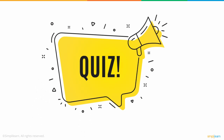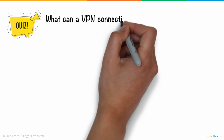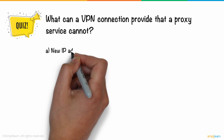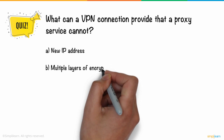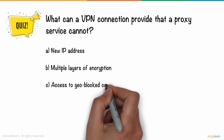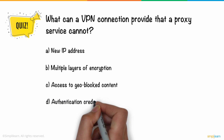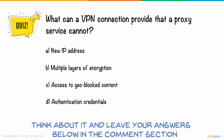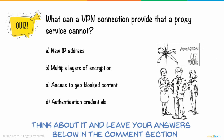Now, let's take a small quiz to check how much we have learned. What can a VPN connection provide that a proxy service cannot? A. New IP address. B. Multiple layers of encryption. C. Access to geoblocked content. D. Authentication credentials. Think about it and leave your answers below in the comments section, and three lucky winners will receive Amazon gift vouchers.